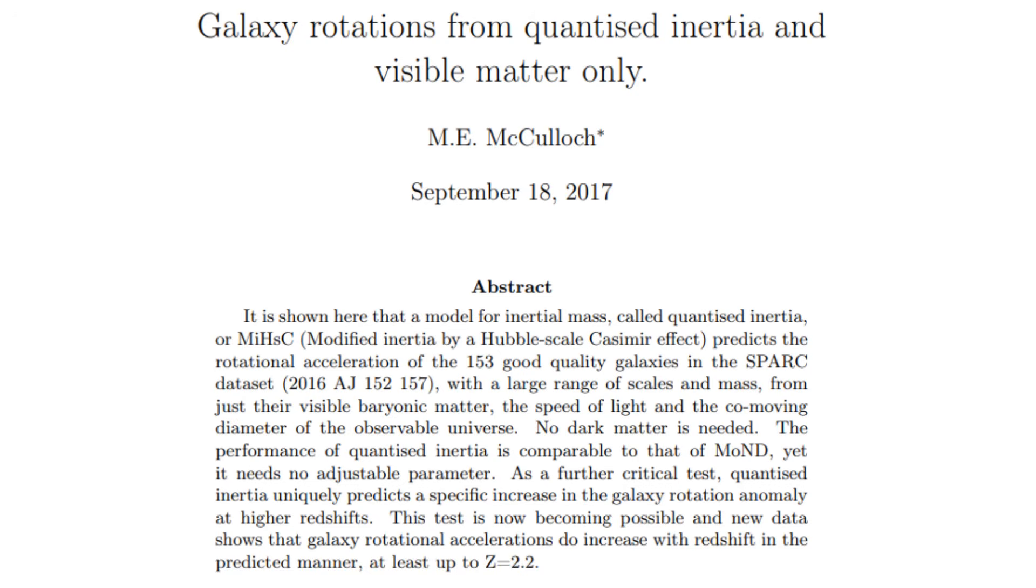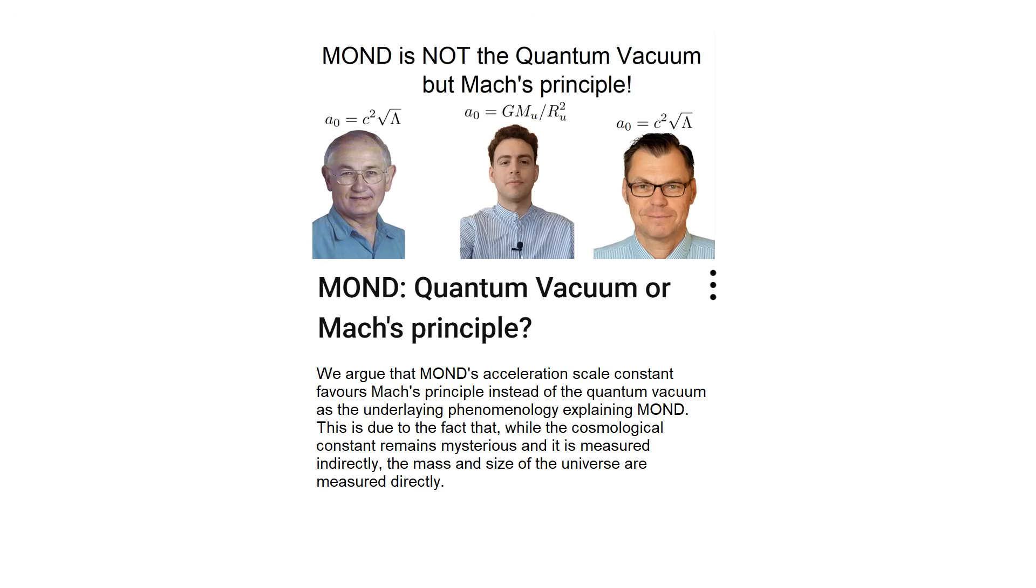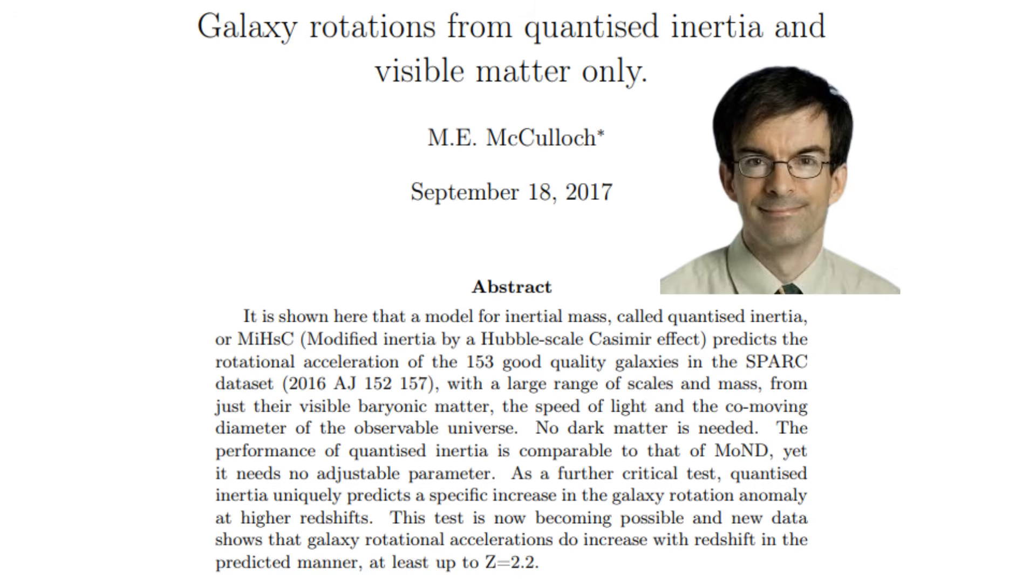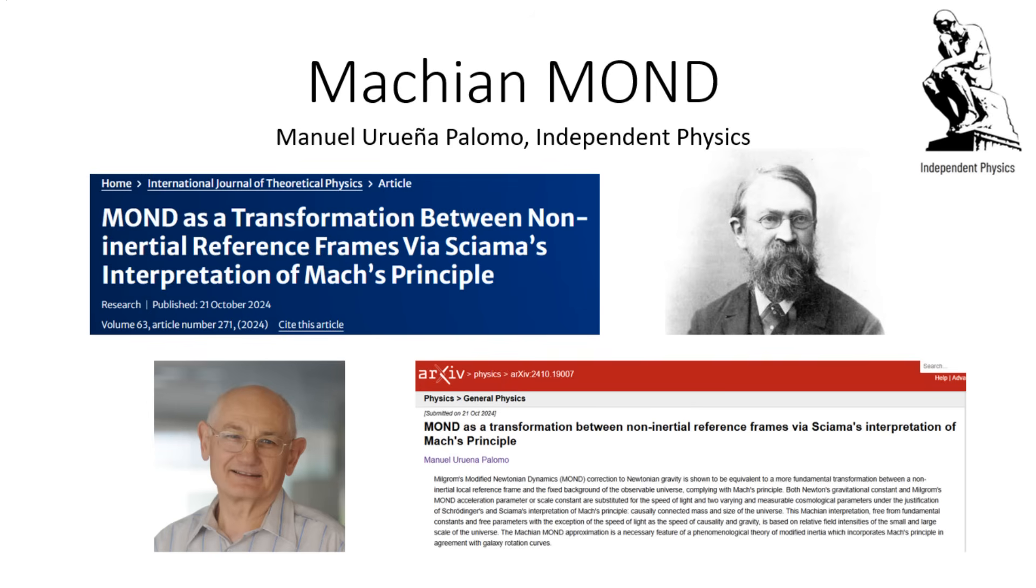But don't get me wrong, the intention behind Quantized Inertia is good, and even Mordehai Milgrom, the original author of MOND, favours the idea that MOND comes from the quantum vacuum modifying inertia. In this video I present why I disagree with both McCulloch and Milgrom in this idea of MOND being related to the quantum vacuum. But I thank McCulloch for putting all his effort in trying to explain MOND, a challenge that I have also accepted, but with a Machian interpretation.